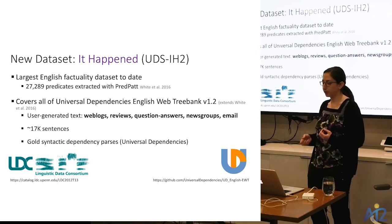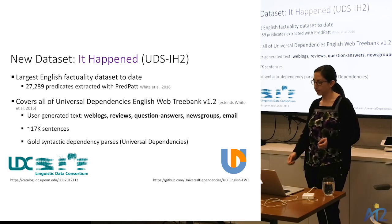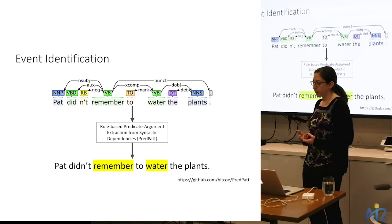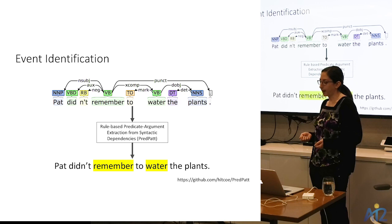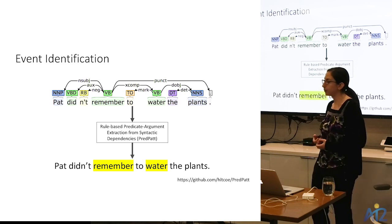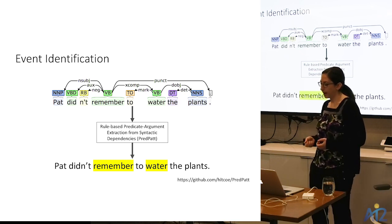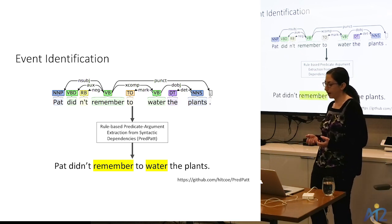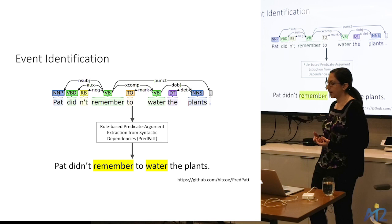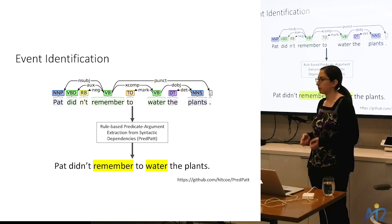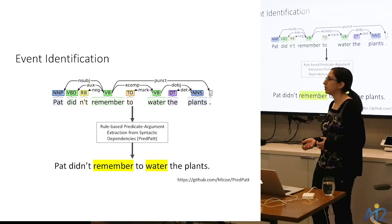In parallel, we have gold-labeled syntactic dependencies according to the Universal Dependencies standard. The first step is identifying tokens that represent events to annotate for factuality. Because we have gold UD syntax, we use a predicate argument extraction system called PredPatt — a rule-based system on top of dependency syntax to extract the predicates. We miss certain event types expressed by noun phrases, but the trade-off is that extraction can be done directly from the syntax.